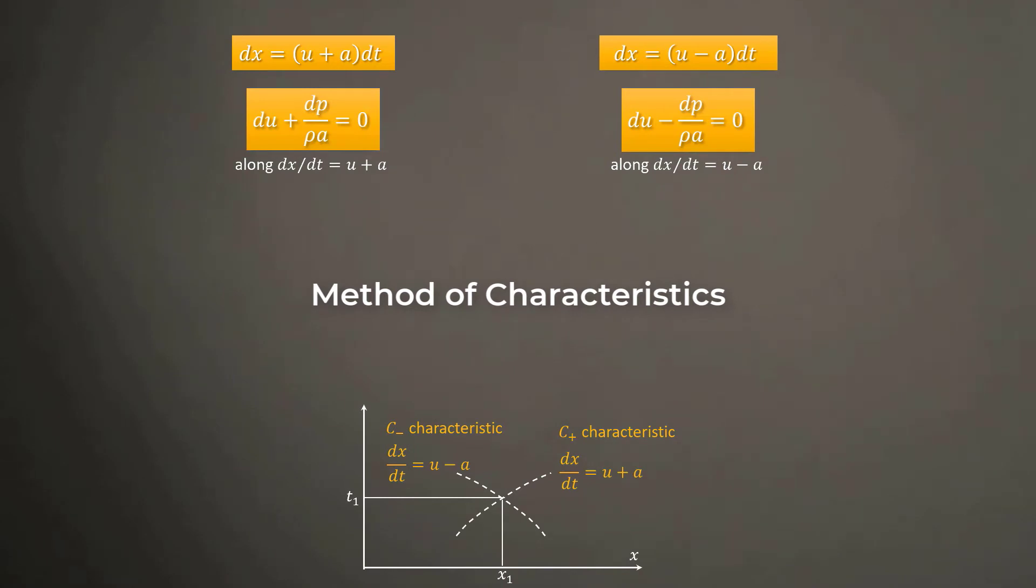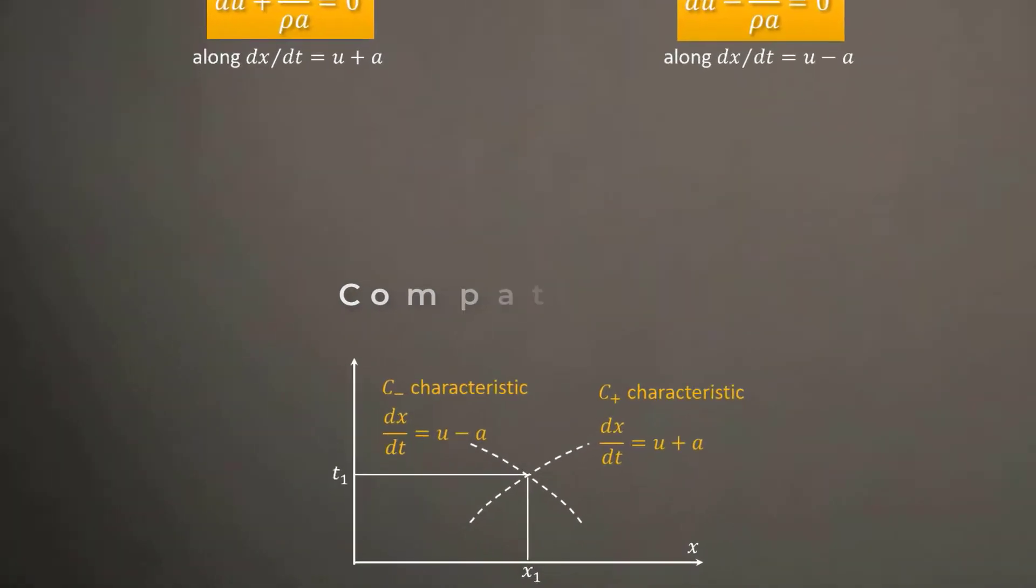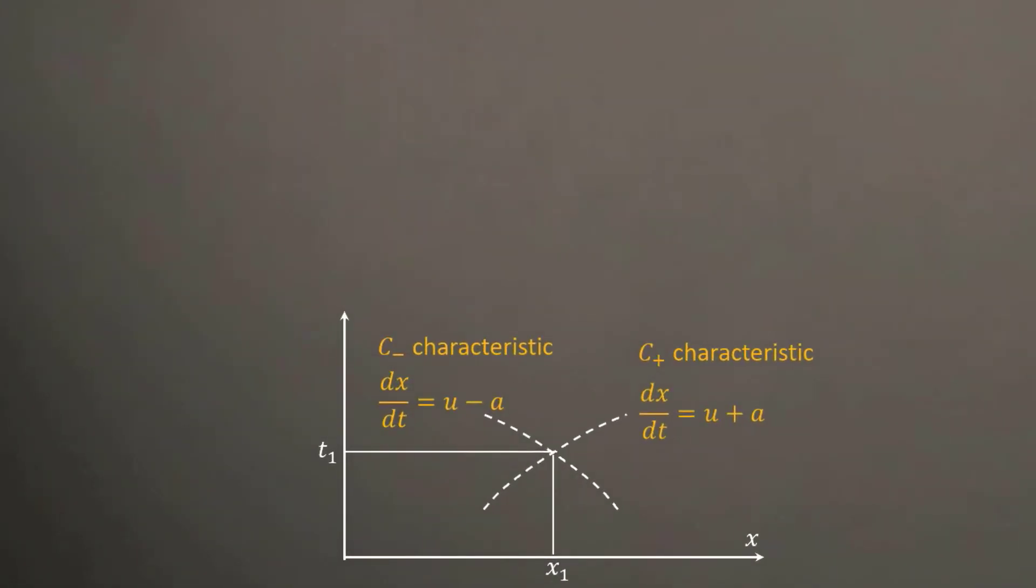The paths are referred to as C plus and C minus, and these two ordinary differential equations are referred to as compatibility equations along those characteristics respectively. One very important thing to note here is that these two characteristic lines, C plus and C minus, physically represent the paths of right and left running sound waves respectively in the XT plane.